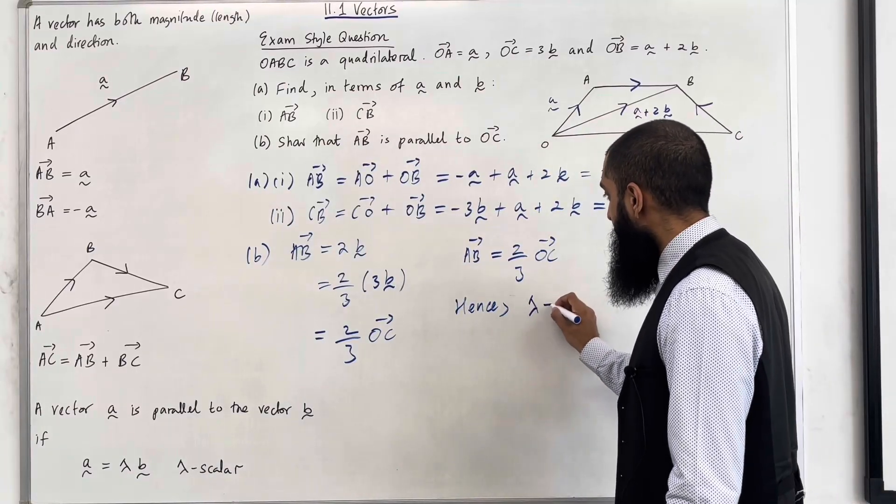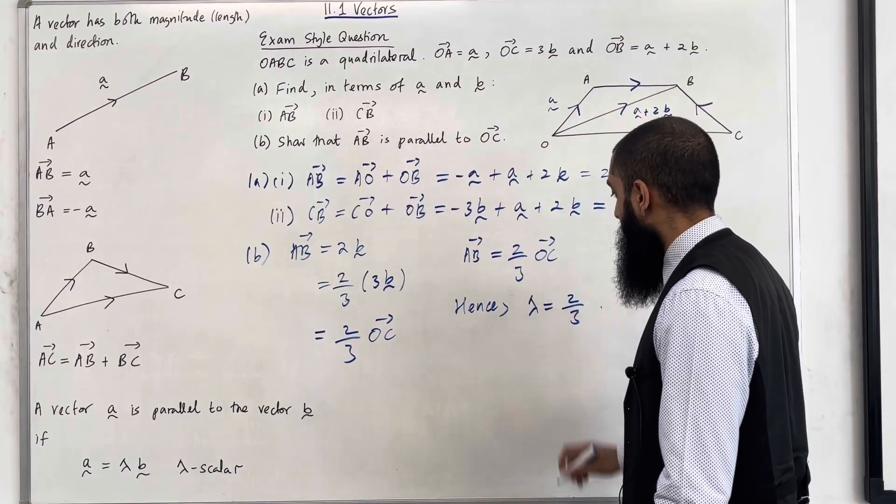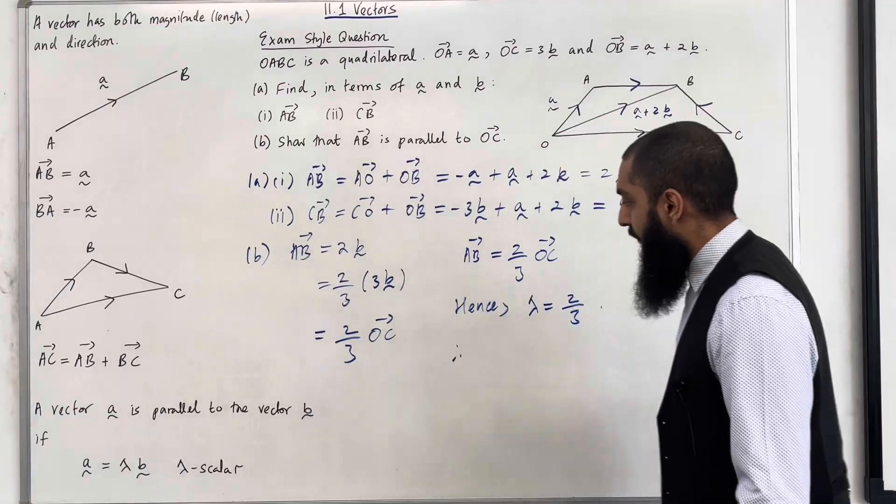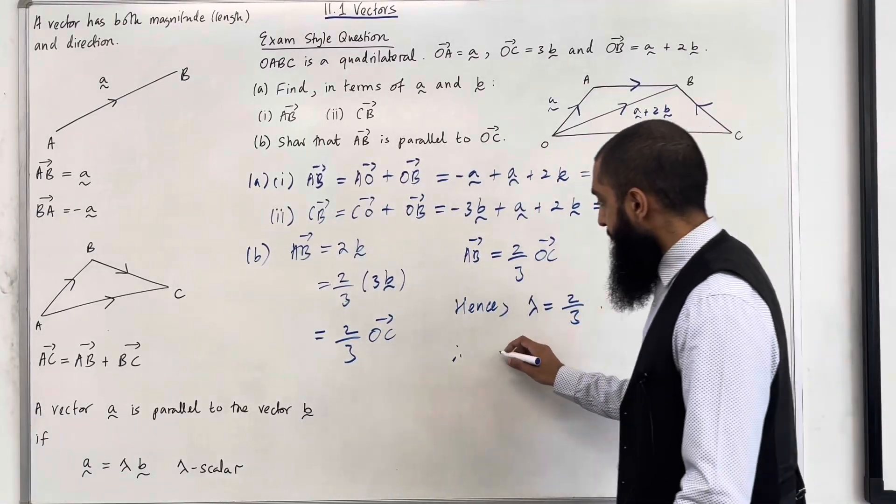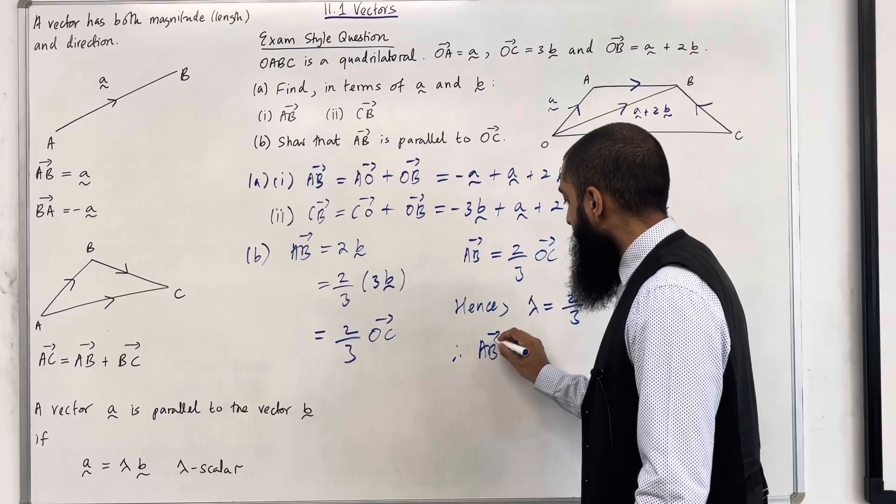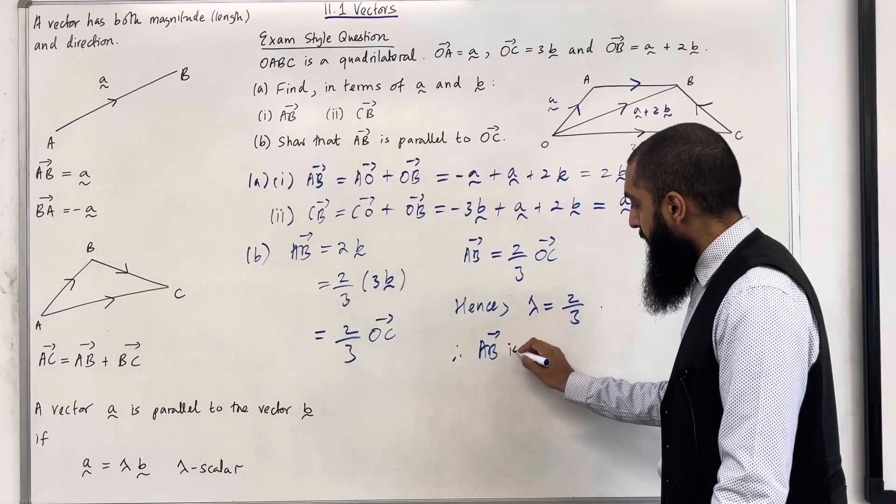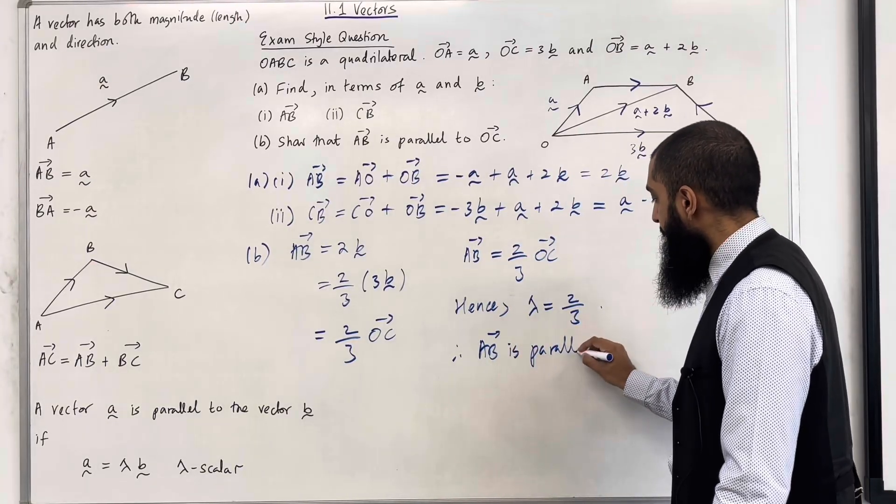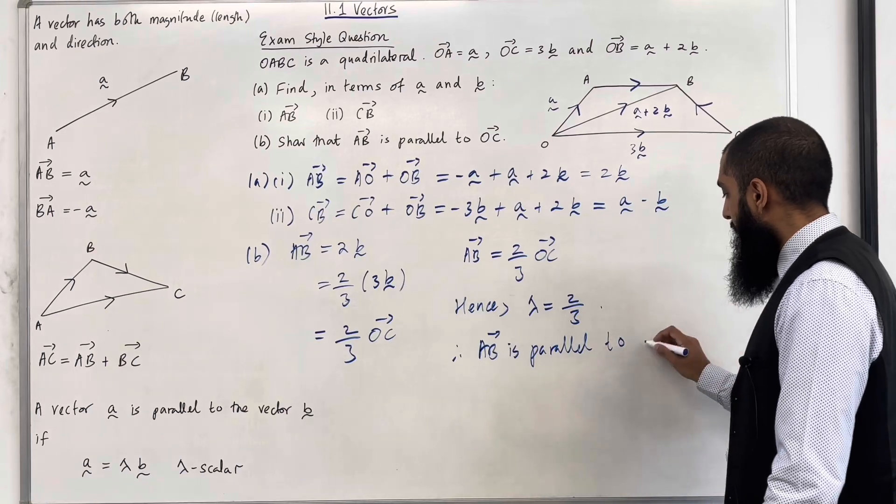Where lambda, the scalar, is equal to 2 over 3. Therefore, we can now conclude that A to B, this vector here, is parallel to the vector O to C.